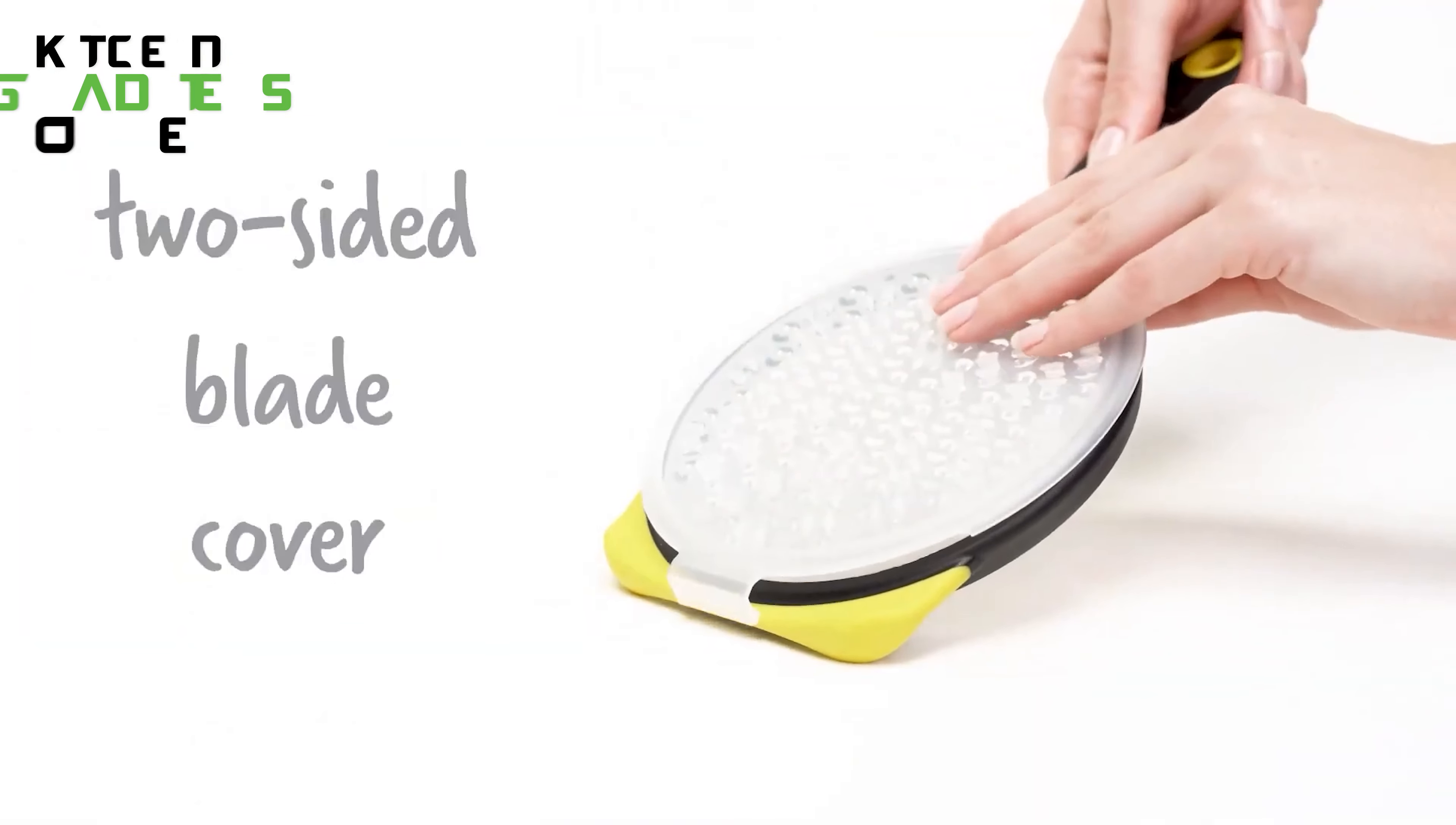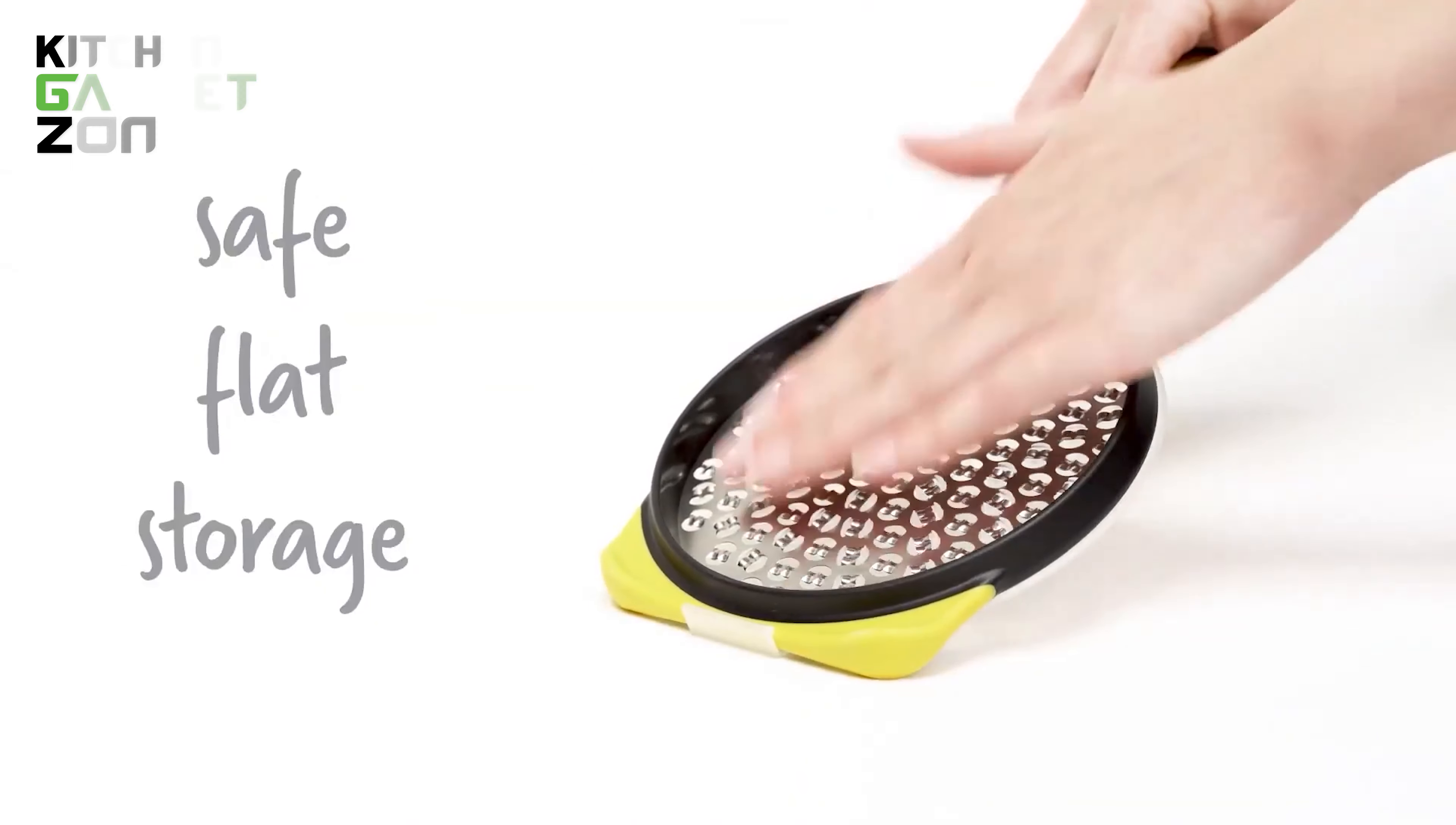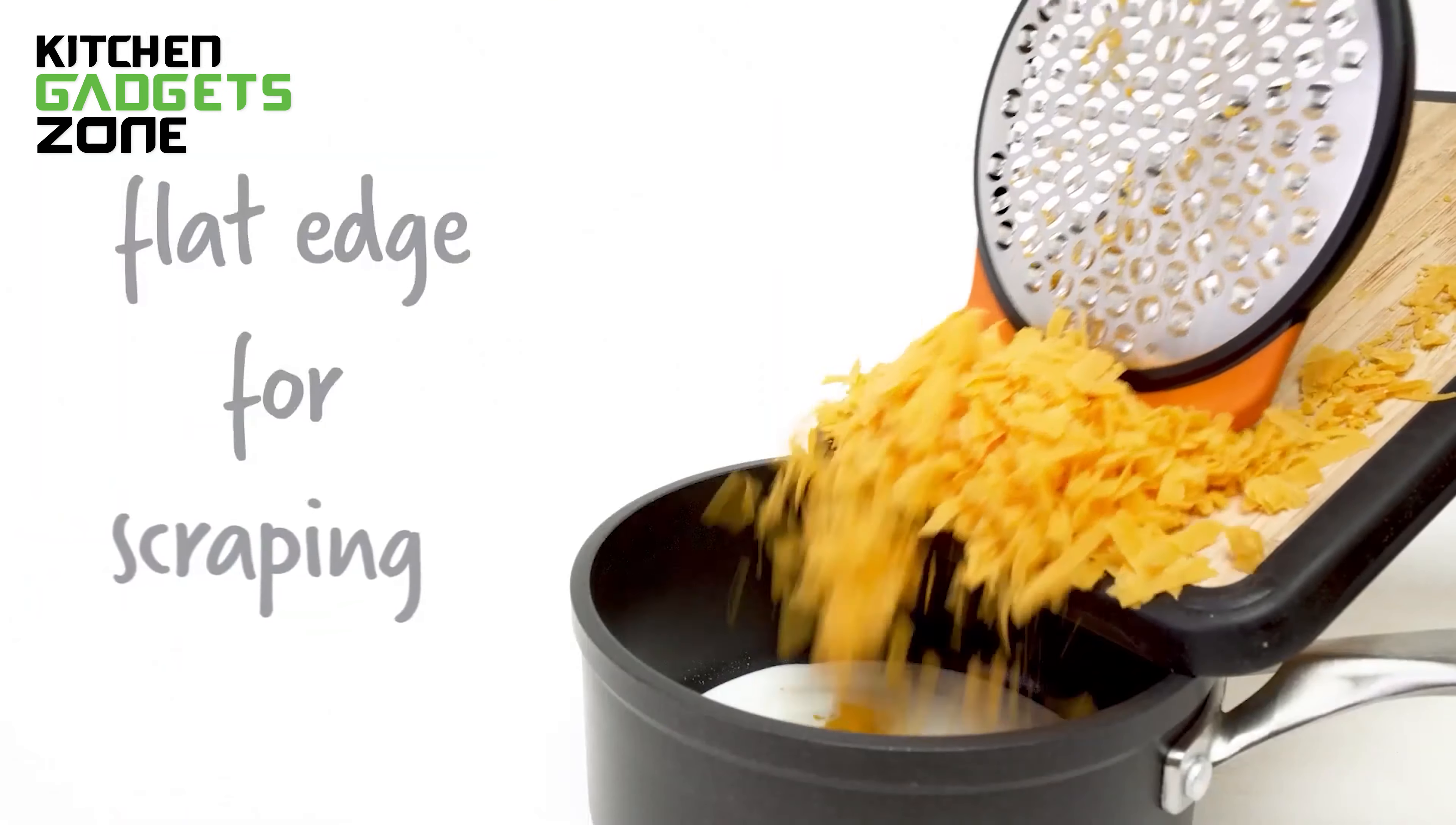But safety is key, and the O-Grate has got you covered with its unique snap-on cover that protects those razor-sharp blades when not in use. The non-slip foot provides stability and control while grating, doubling as a scraper, and even hooking onto the edge of a bowl.